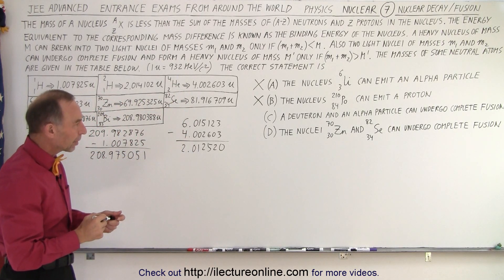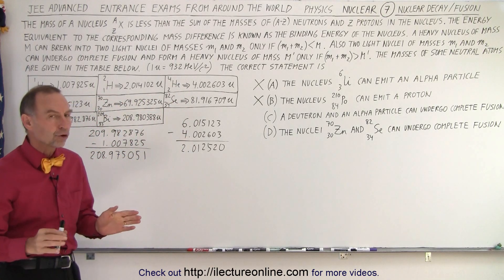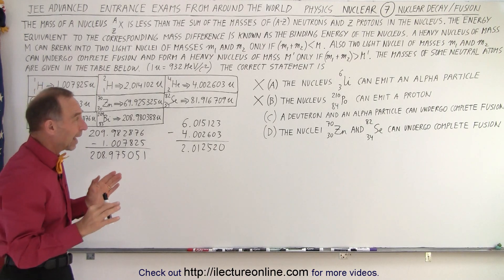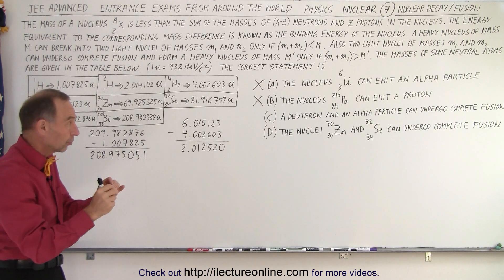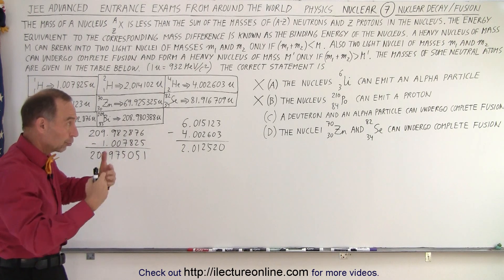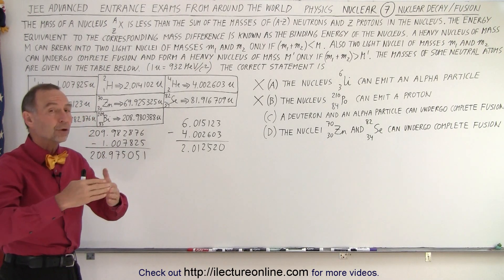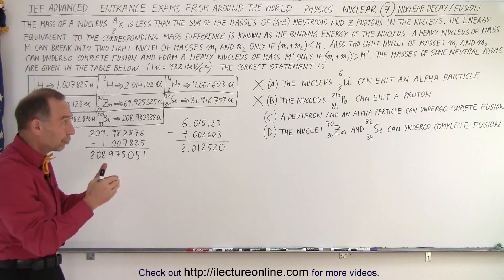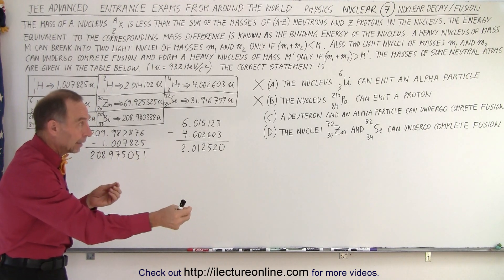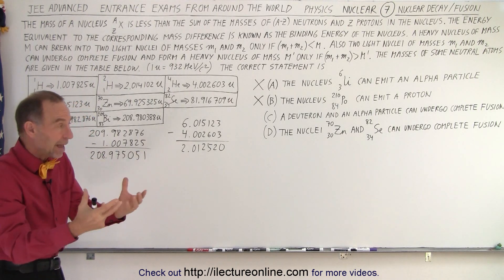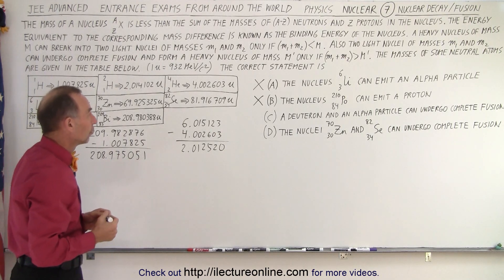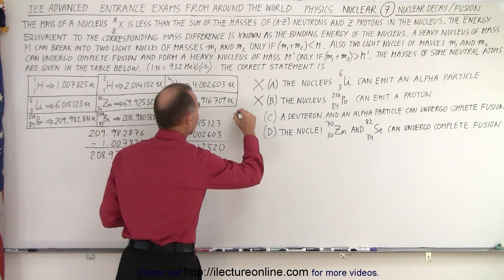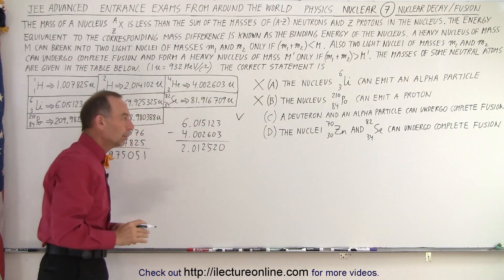How about C? A deuteron and an alpha particle can undergo complete fusion. Well, you expect that to be able to happen. Smaller particles, like a deuteron and alpha particle, or smaller atoms, should be able to fuse. Anywhere up to iron. Typically, the resulting fusion results in an end product that has less mass than the initial two products. So I would say, automatically, yes. But we can check that in a moment.